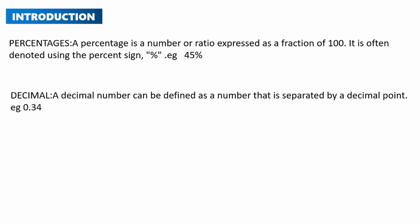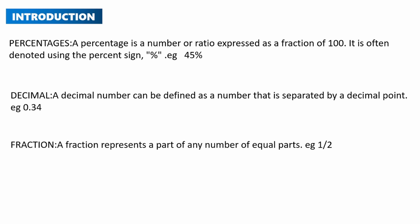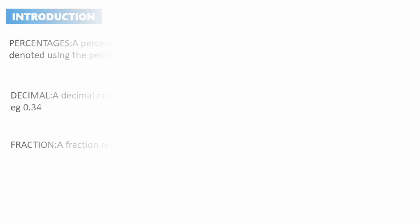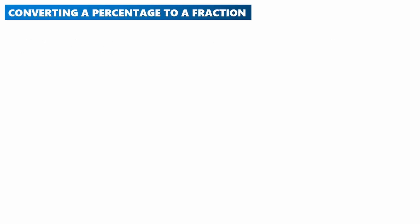What is a decimal? A decimal number can be defined as a number that is separated by a decimal point — for example, 0.34. What is a fraction? A fraction represents a part of any number of equal parts — for example, 1 over 2.